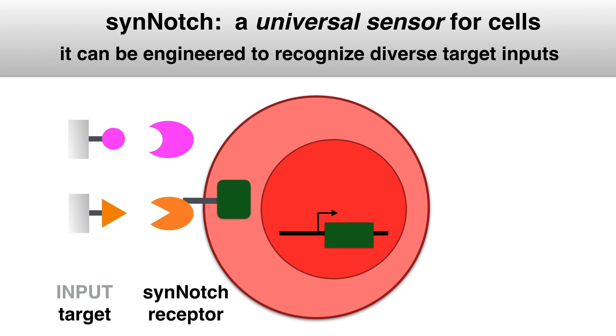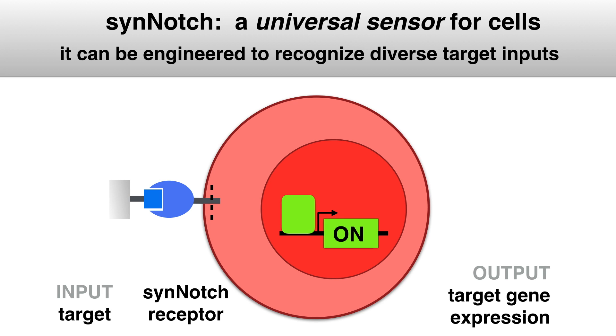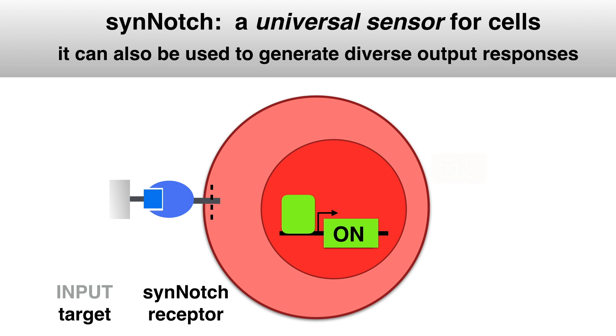When SynNotch recognizes its input, it leads to expression of a specific target gene. We can change the response of the cell by swapping what target gene is switched on.